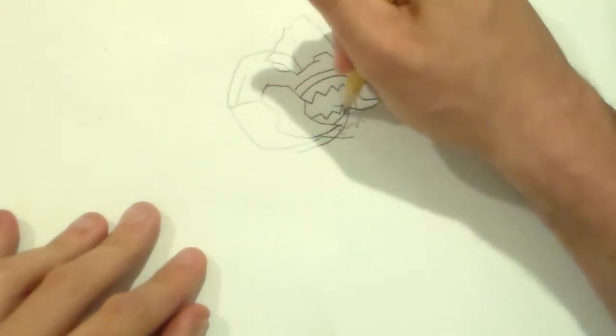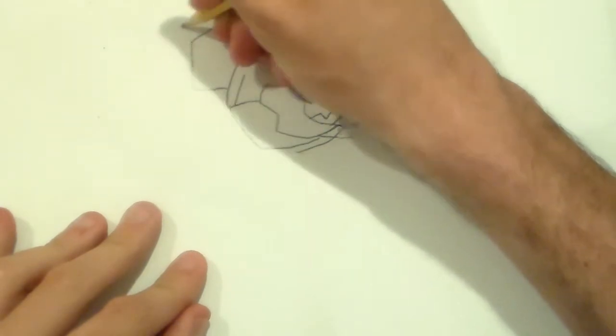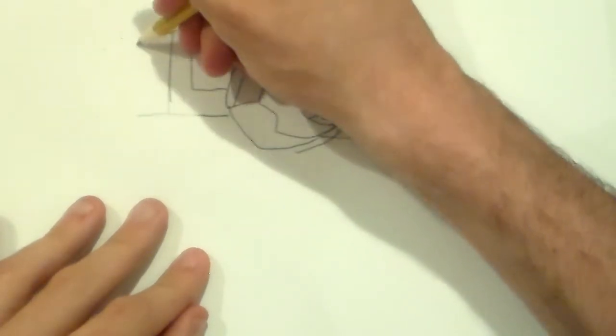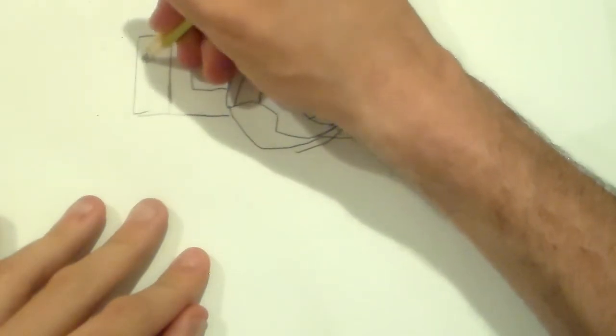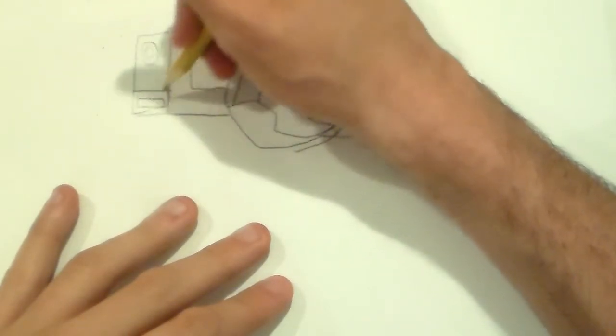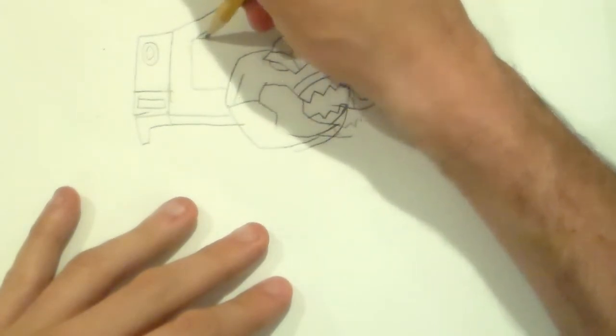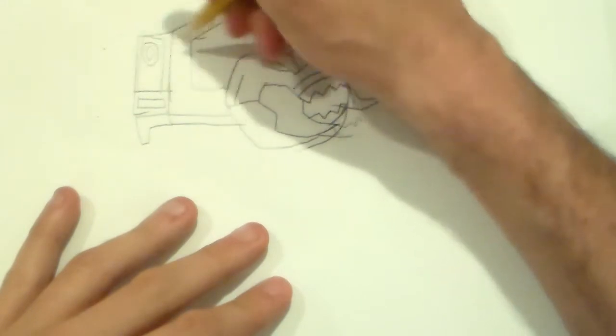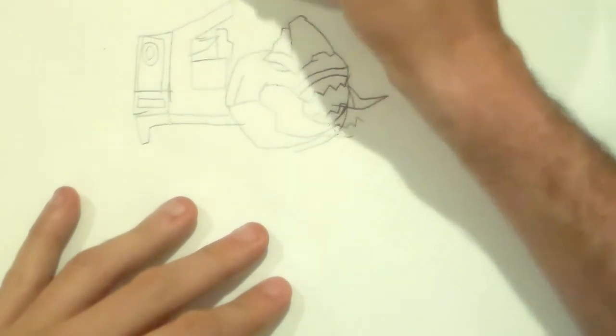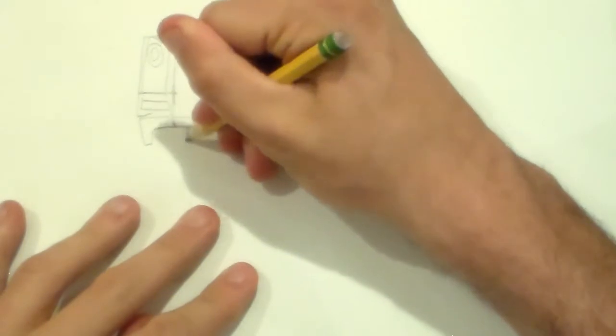If you ask me, he kind of looks like Jaws from this picture. Alexa, play it again. I'll repeat the song. There we go. There's his arm here. There's his arm here. All right.